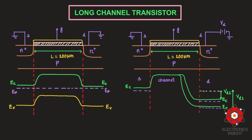The conduction band widens at the drain side because we are applying a more positive potential to the heavily n-type doped drain region. Since we have a p-type substrate and n-type drain, this forms a reverse-biased p-n junction. The drain depletion region extends downwards. As I apply VD1, the conduction band level at the drain side decreases from its previous value.